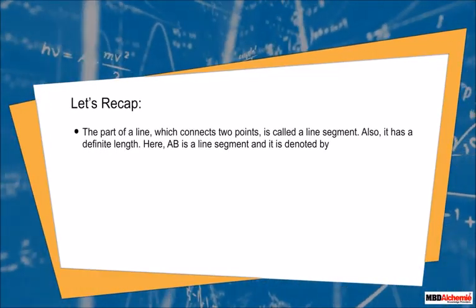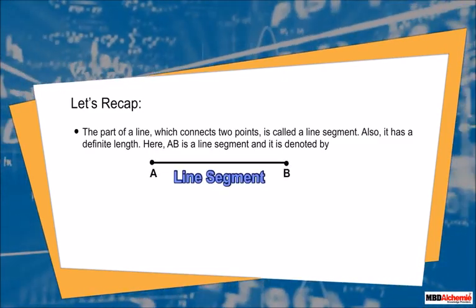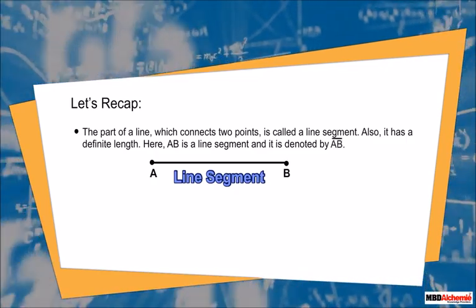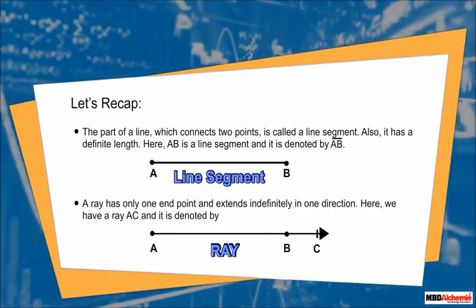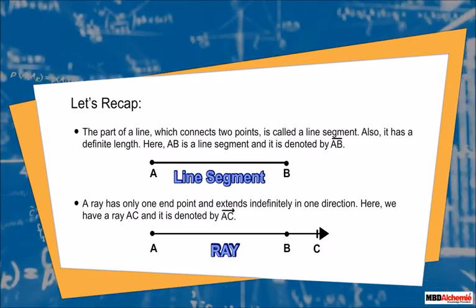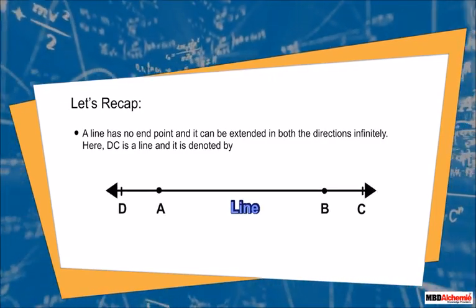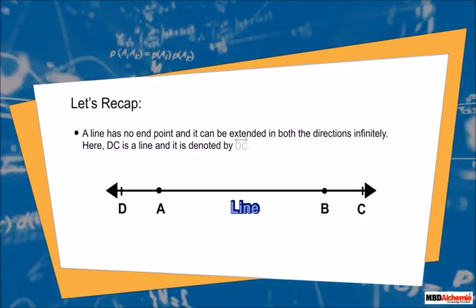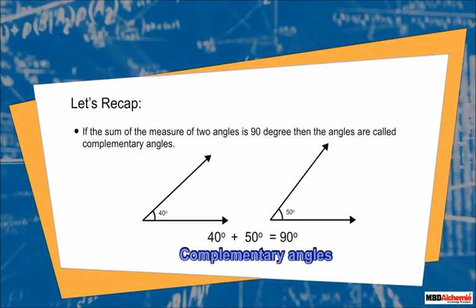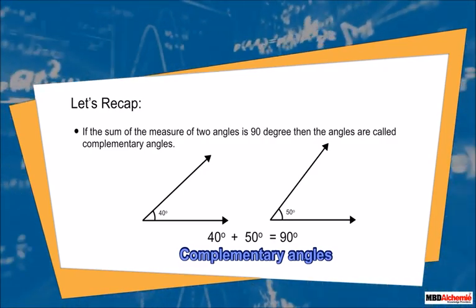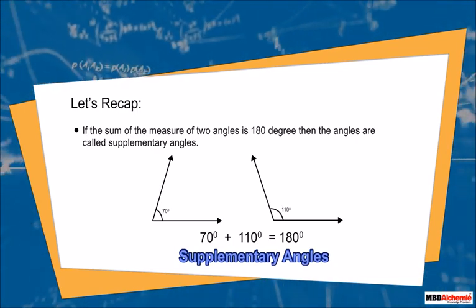Let's recap. The part of a line that connects two points is called a line segment; it has a definite length. AB is a line segment, denoted by a line over the top of the letters. A ray has only one end point and extends indefinitely in one direction; ray AC is denoted by a single arrowhead over the letters. A line has no end point and extends in both directions infinitely; DC is denoted by a double arrowhead. If an angle is less than 90°, it is acute. If the sum of two angles is 90°, they are complementary. If the sum is 180°, they are supplementary.